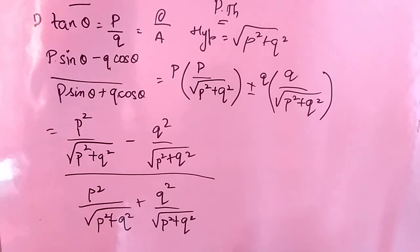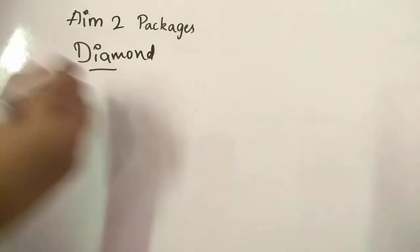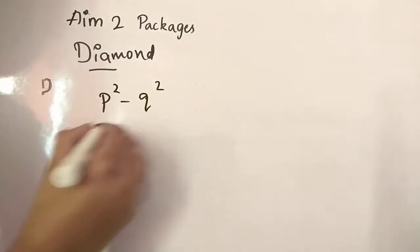So up to here, note it, then I'll continue. So just now we wrote like that. Now, now we will write in a simplest form like, P square minus Q square by,